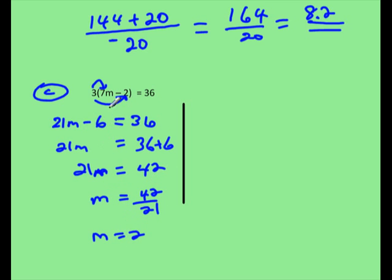Let's plug it in the original equation and see if that works. 7 times 2, because m is 2. 7 times 2 is 14 minus 2, that's 12, and 12 times 3 is 36. So it does work.